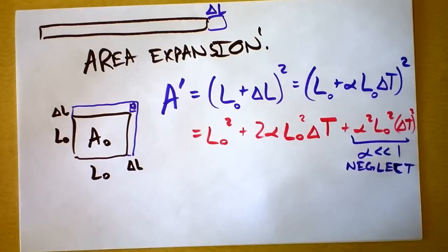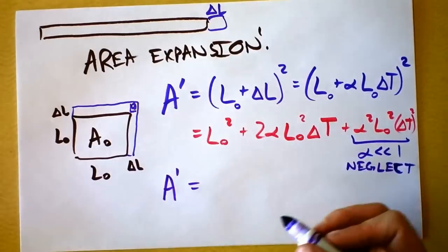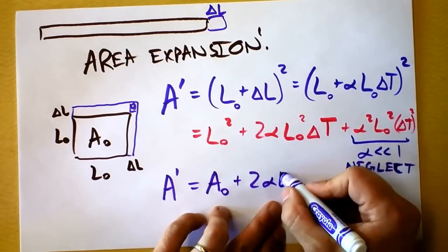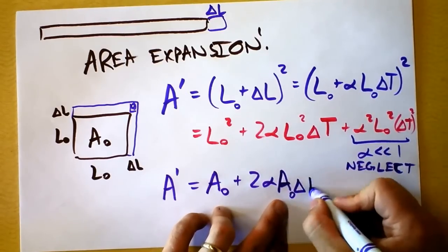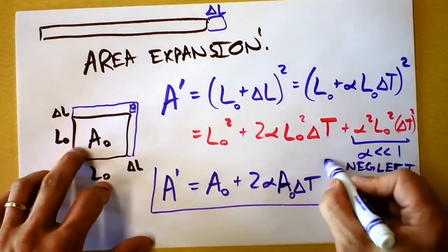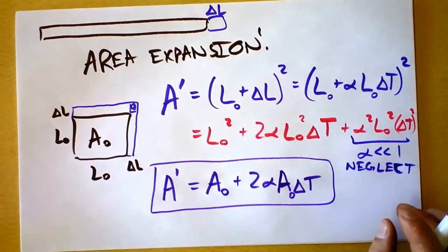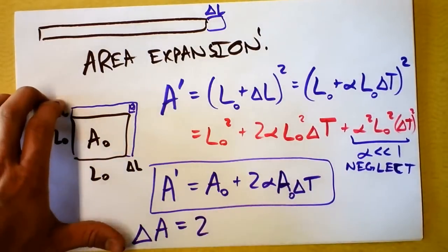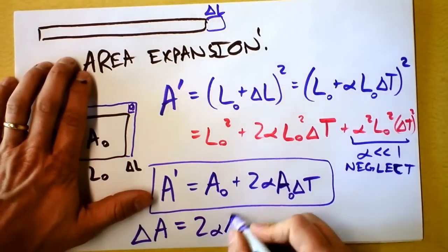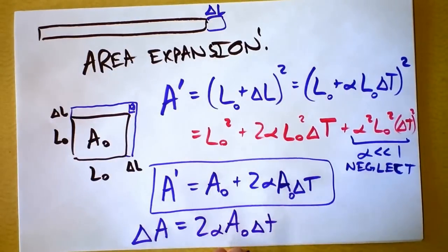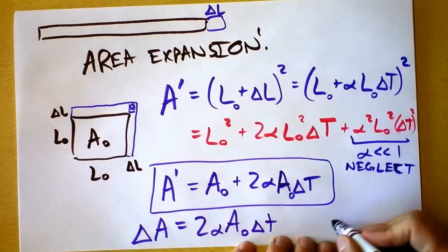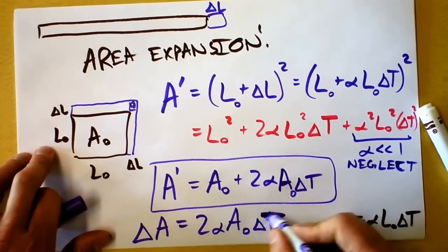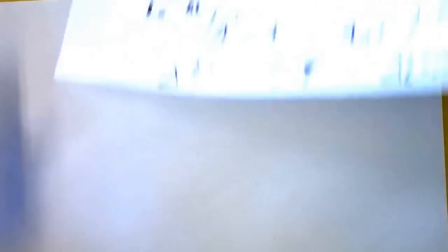So our new area A' is our old area plus 2·α·L₀²·ΔT, and since L₀² is just the original area A₀, this becomes A₀ + 2·α·A₀·ΔT. Simplified: the change in area ΔA = A' − A₀ = 2·α·A₀·ΔT. Compare to linear expansion: ΔL = α·L₀·ΔT. The area equation is analogous but has a factor of 2 in it.